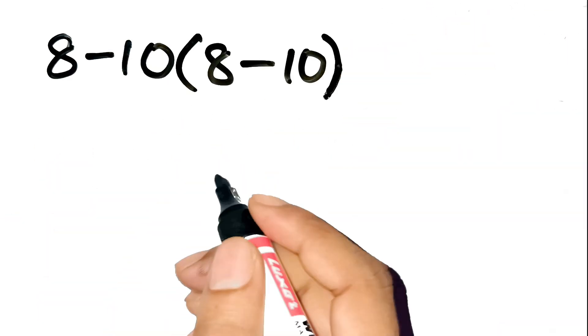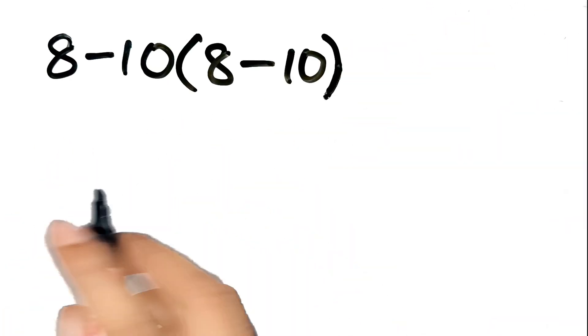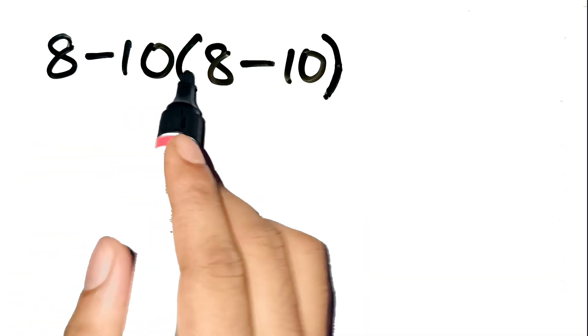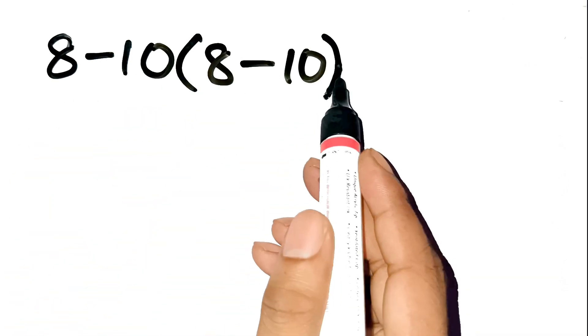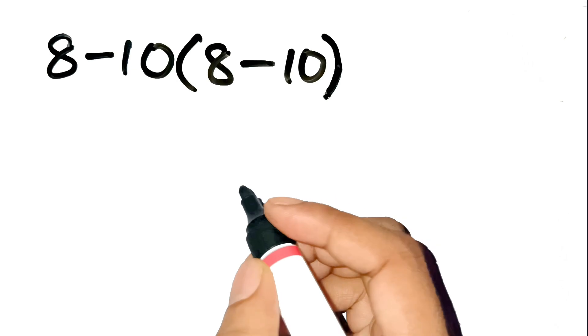Okay, back to the point. So here's where the mistake happens. The problem 8 minus 10, open parentheses, 8 minus 10, close parentheses, looks simple, but it's sneaky.